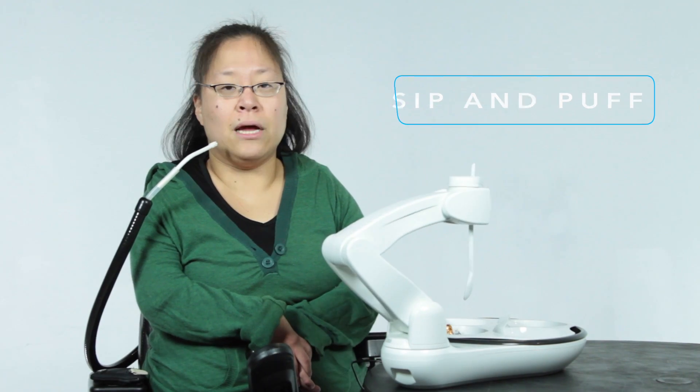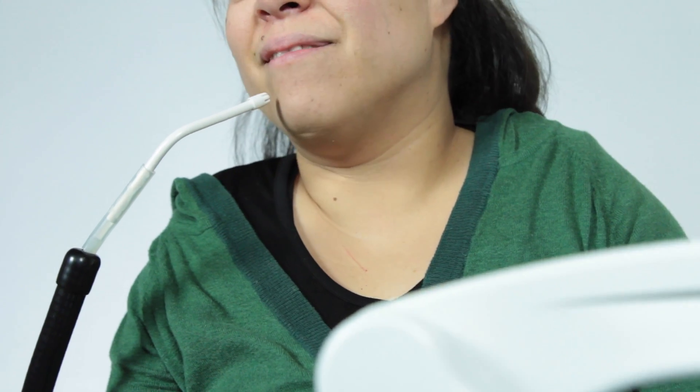The last way I'll show you how to use OB is with a sipping pump attachment. This is helpful for people that don't have any range of motion from the neck down.